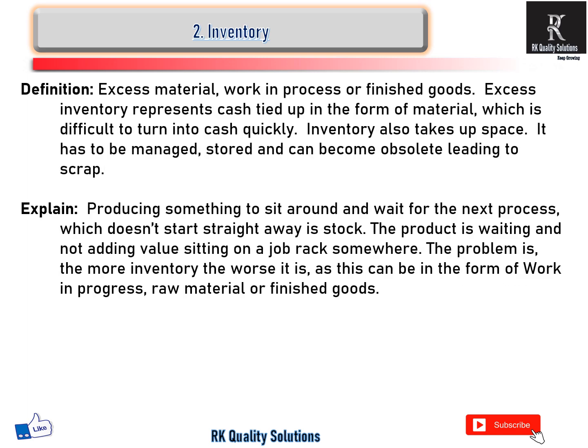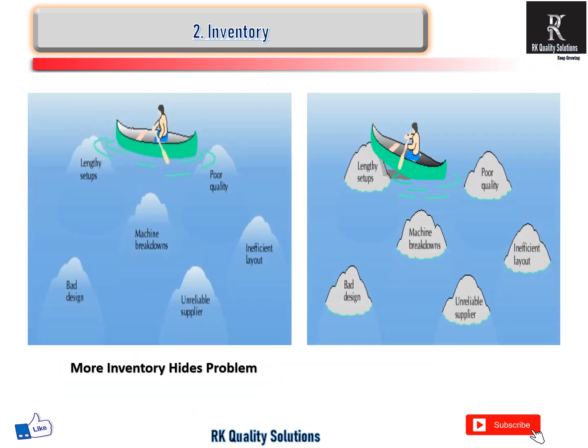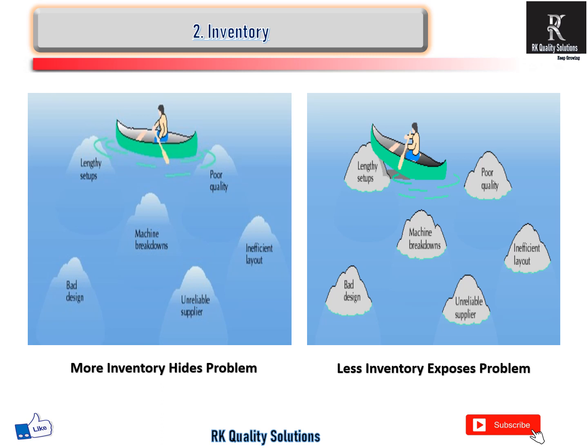Second is excess inventory — excess material, work in process, or finished goods. Excess inventory represents a cash drain. For example, producing something and having it sit waiting for the next process, which does not start right away — the product is waiting, non-value-added, sitting on a rack somewhere. The problem is more inventory. It can take the form of work in process, raw material, and finished goods. More inventory hides the problem; less inventory exposes the problem. If the problem is found, we can solve it — otherwise it is dangerous for our business.